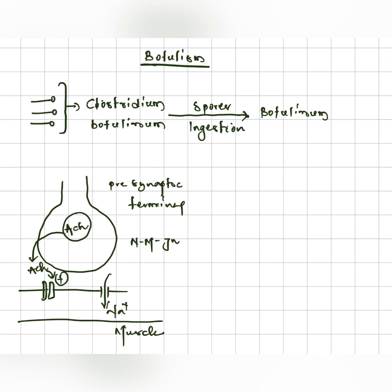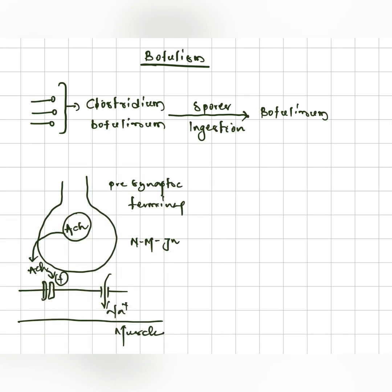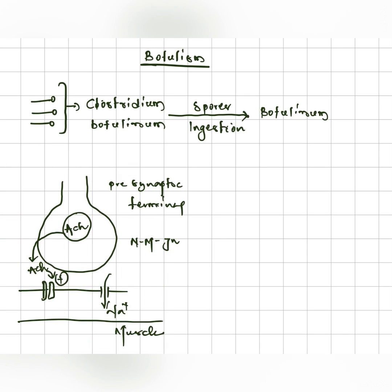What happens here? This botulinum toxin will go and inhibit the acetylcholine so that acetylcholine cannot be released and receptors are not activated. There will be no opening of ion channels.